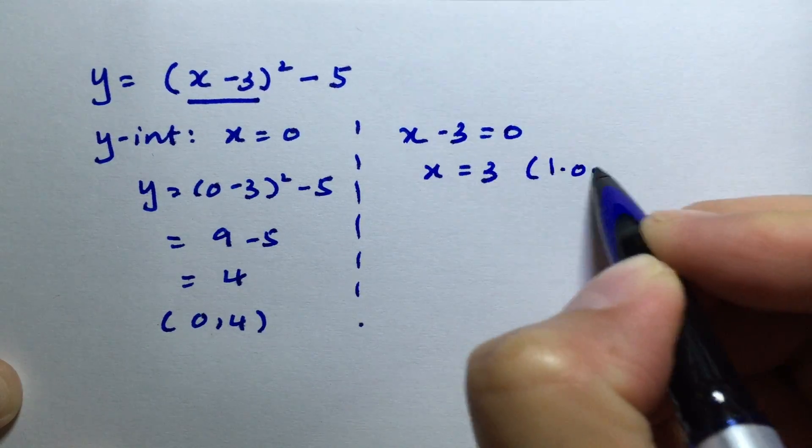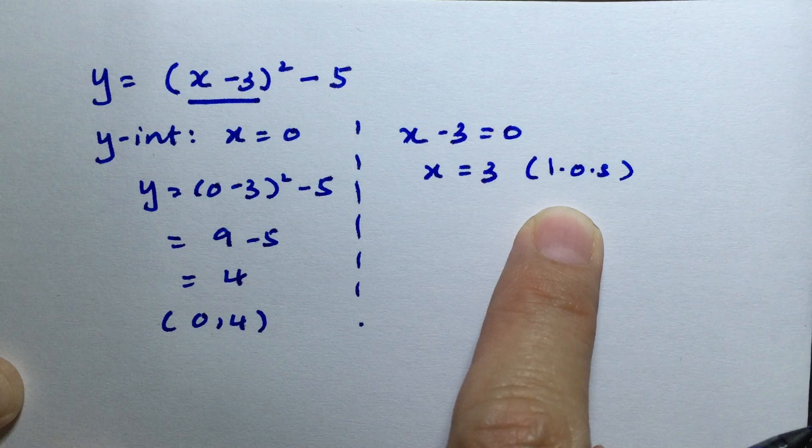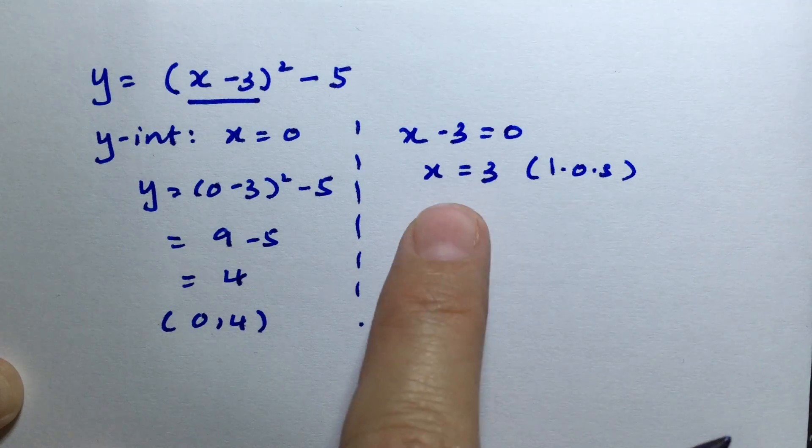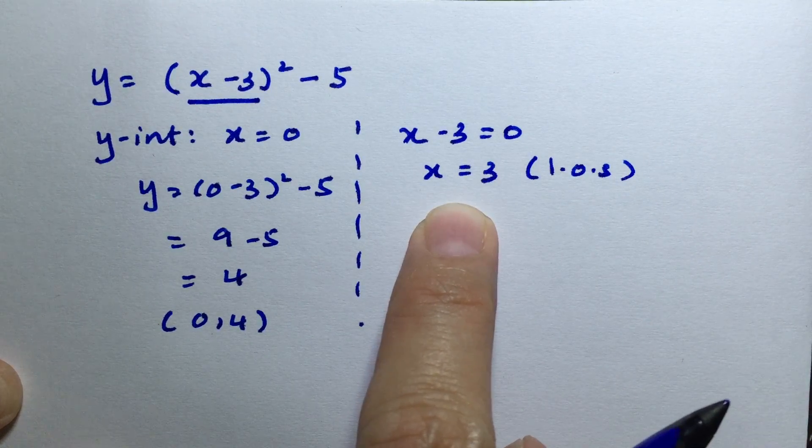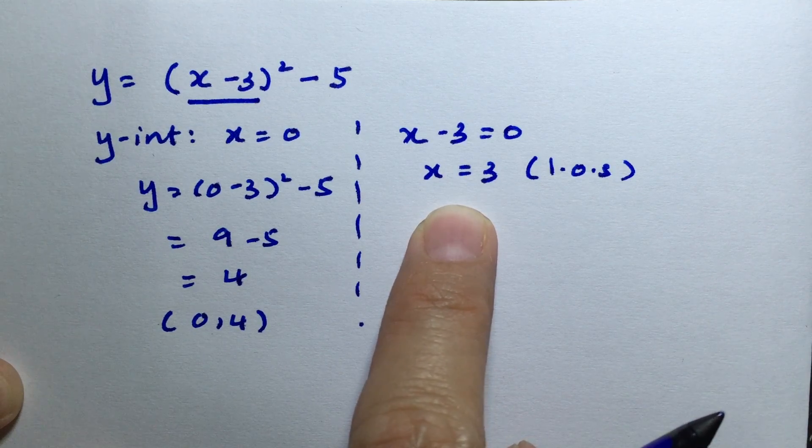The turning point lies on the line of symmetry, so this gives us the x-coordinate of the turning point. Now, how do we get the y-coordinate?